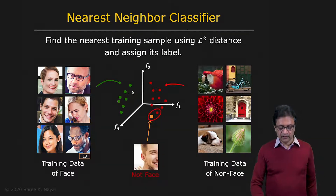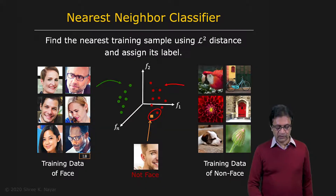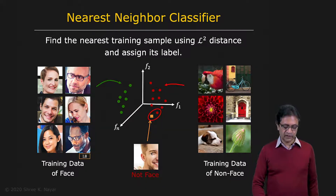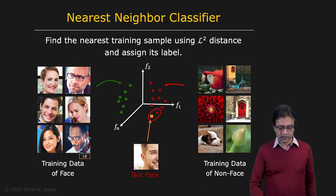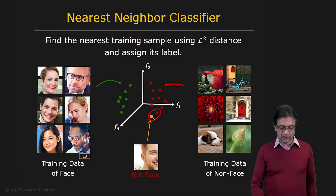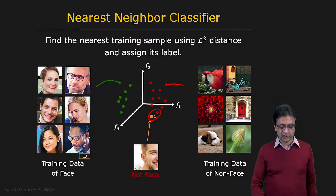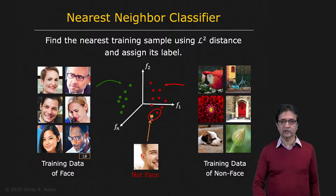Now, if you have this image — well, it's a face, but it's actually not a face because it's not a centered face. It's a part of a face, and for us that is a non-face. That ends up at this location, and we find that the closest neighbor is not a face, and therefore it's classified as not a face.